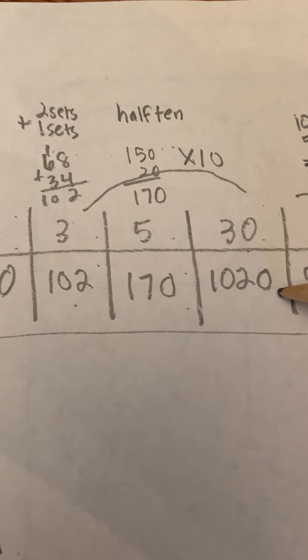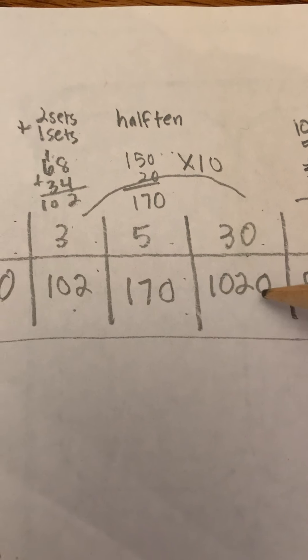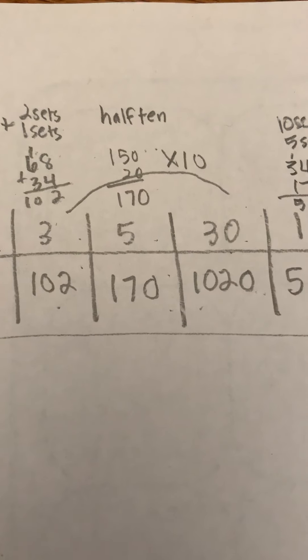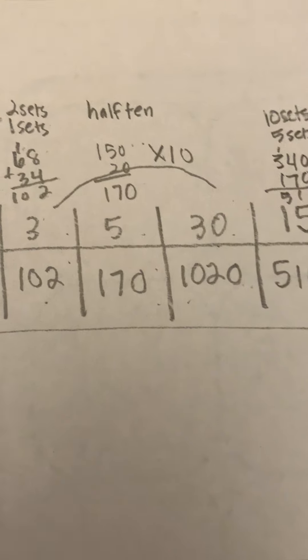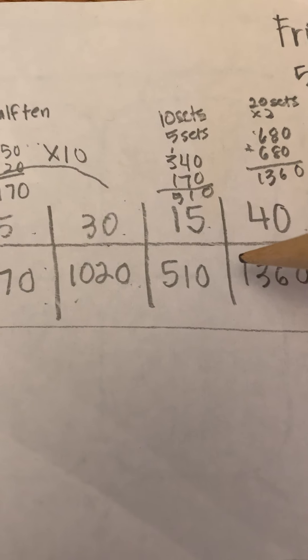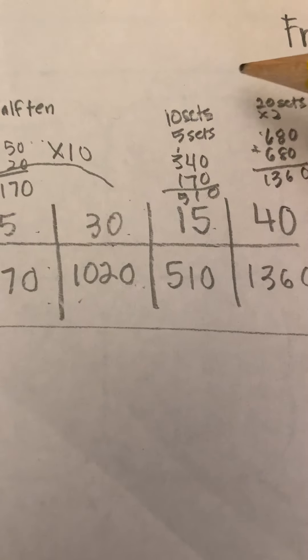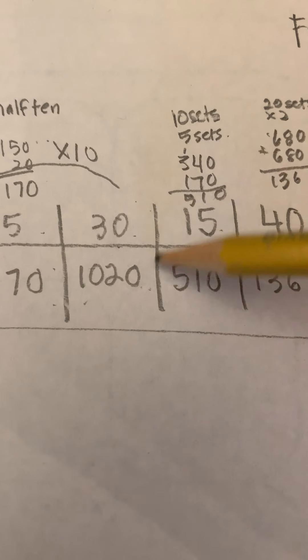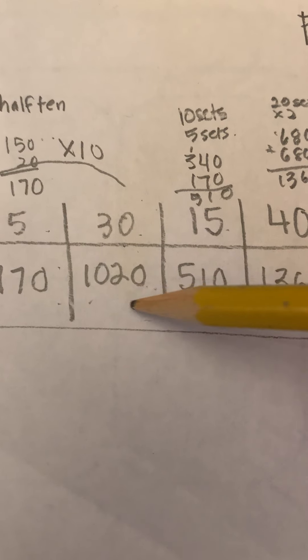Multiplying by 30, I move my 3 all the way over and put a 0 to hold the place, 1,020. And then 15, I could do 10 sets and 5 sets, or I could do half of this number.